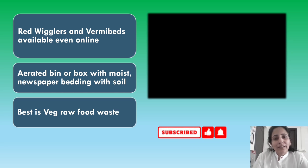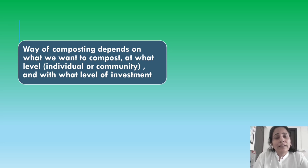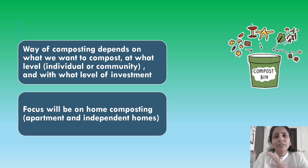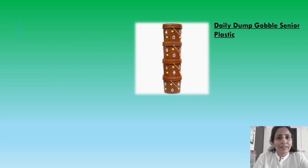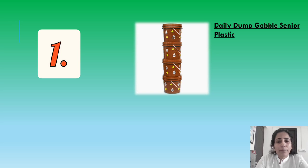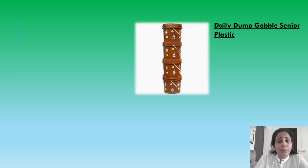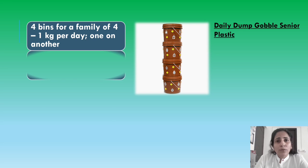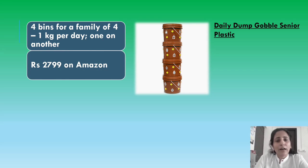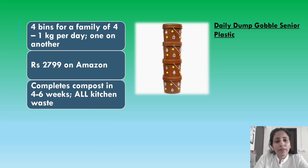Now is the time for composting gear options. We select them based on our requirement — the scale of composting and the level of investment. In this video we focus on home composting, be it apartment or independent home. Based on my research, the first gear is the Daily Dump Globus Senior plastic composter, which has various variants. The general composting time claimed is one and a half months, and the price range is 1,800 to 3,500 rupees — for example, one bin cost around 2,800 on Amazon. They claim all kitchen waste can be added.